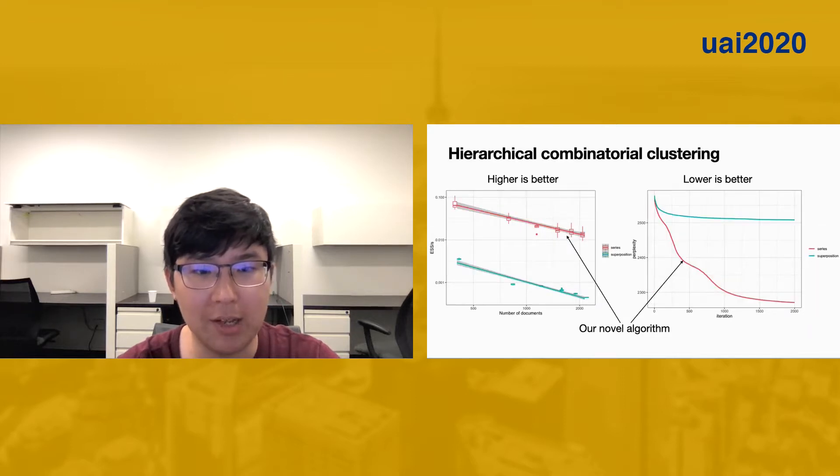Our second experiment analyzed the Neurobs corpus from 2010 to 2015. As we increase the number of documents, our method consistently generates higher effective sample size per second, as you can see on the left.